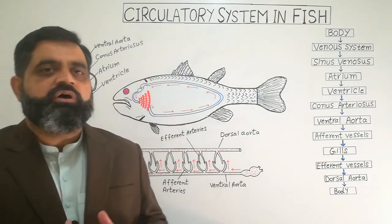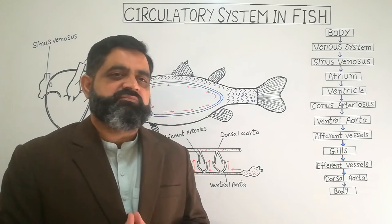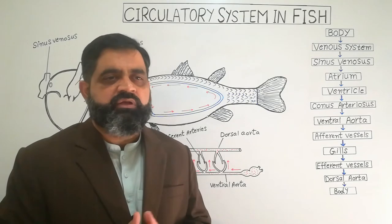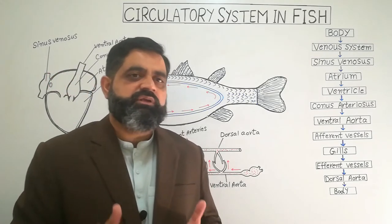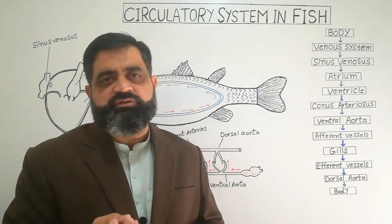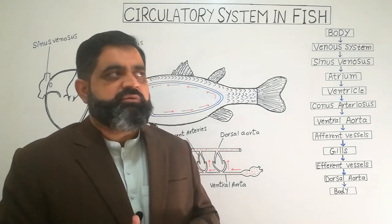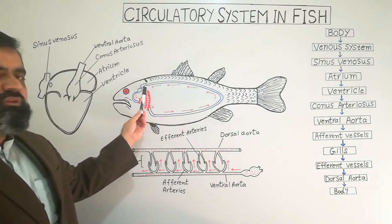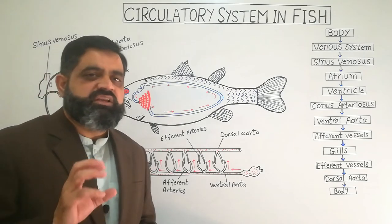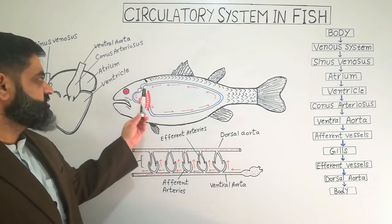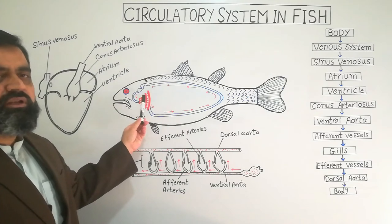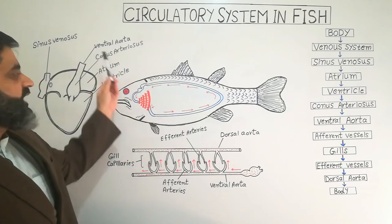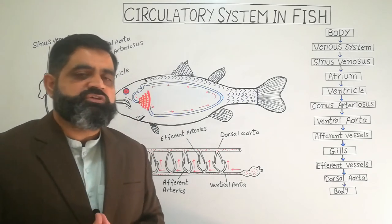Deoxygenated blood from all over the body is collected by the venous system — a network of veins spreading throughout the body. Deoxygenated blood contains less oxygen. This blood is brought toward the heart, entering the sinus venosus, then the atrium, then the ventricle, then the conus arteriosus, and finally into the ventral aorta.